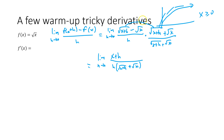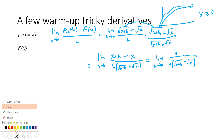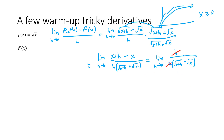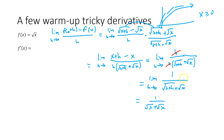Multiplying out the top: √(x+h) times √(x+h) is just x+h; the middle terms with √(x+h)·√x cancel; and -√x times √x gives -x. So the numerator becomes x + h - x = h. We have limit as h approaches 0 of h / [h(√(x+h) + √x)]. The h's cancel, leaving the limit as h approaches 0 of 1 / [√(x+h) + √x]. Plugging in 0: that's 1 / (√x + √x) = 1 / (2√x).